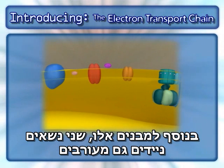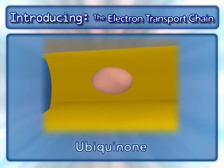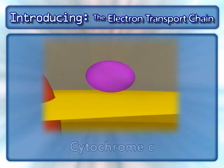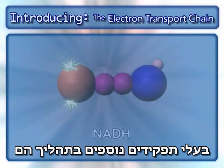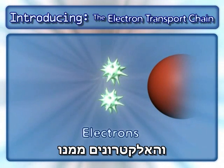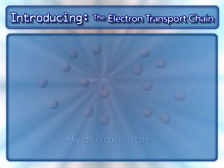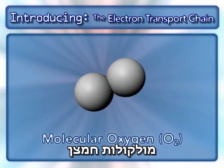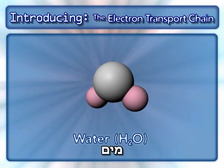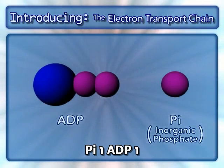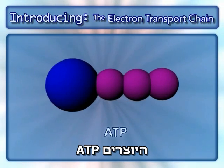In addition to these complexes, two mobile carriers are also involved: ubiquinone and cytochrome C. Other key components in this process are NADH and the electrons from it, hydrogen ions, molecular oxygen, water, and ADP and inorganic phosphate, which combine to form ATP.